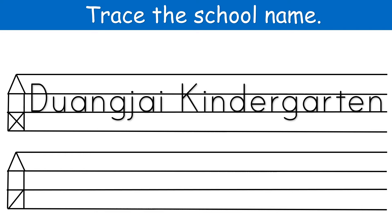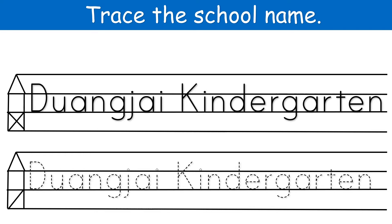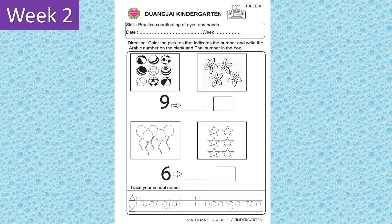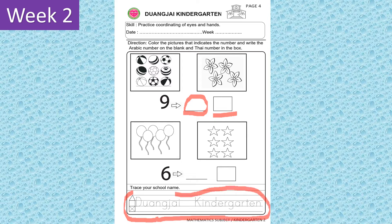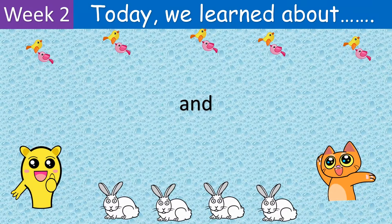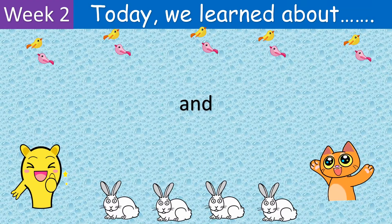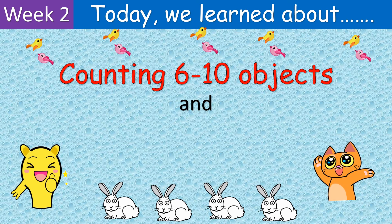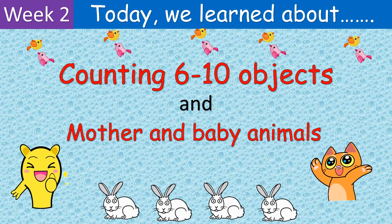Now, you're going to trace your school name. What is your school name? My school name is Duang Dai Kindergarten. Here's your work for today. Color the pictures that indicates the number and write the Arabic number and the number in the box. And don't forget to trace your school name, Duang Dai Kindergarten. Today we learned about counting six to ten objects and the mother and baby animals.